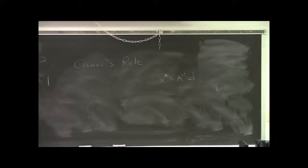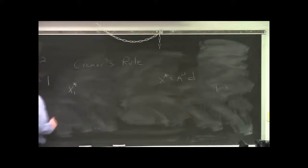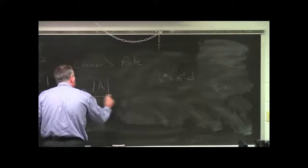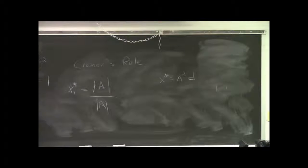If you have two equations and two unknowns, then Cramer's rule is this: x1 star, the solution value for x1, is the determinant of A sub 1 divided by the determinant of A. Let me explain what A sub 1 is. You take your A matrix. Let's recall that our coefficient matrix is 1, 1, 2, minus 1.